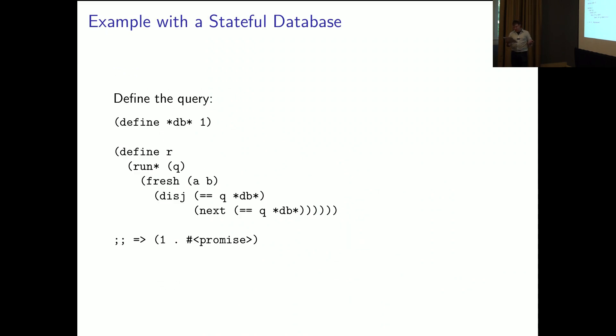So, in this first example, we use dish to specify a query that equates to this database either now or at the next point in time. And the first solution in the result of return stream is none other than one, the current value of the DB while the promise contains the delayed stream to be evaluated at a future point in time.